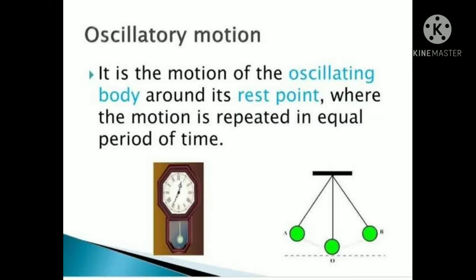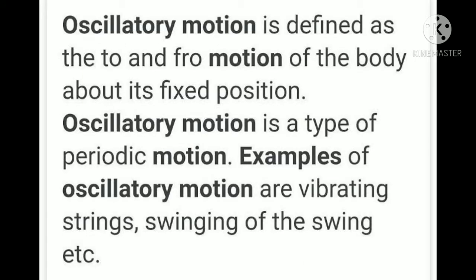Without blades a helicopter cannot fly, and also the Earth rotating on its own axis — these are examples of rotatory motion. Next is oscillatory motion: the motion of an oscillating body around its rest point where the motion is repeated in equal intervals of time. The clock pendulum has its own equal interval of time.